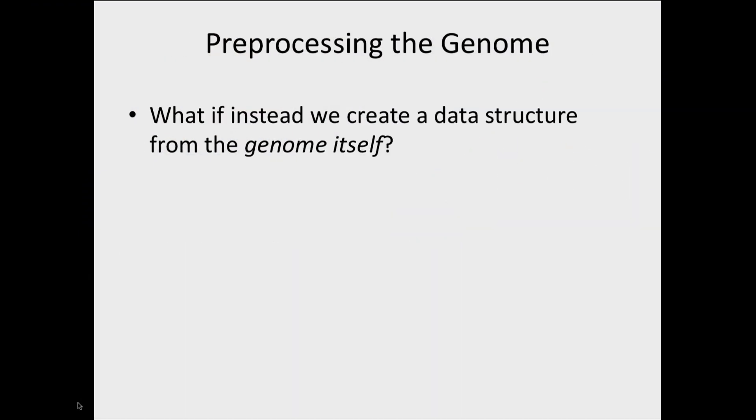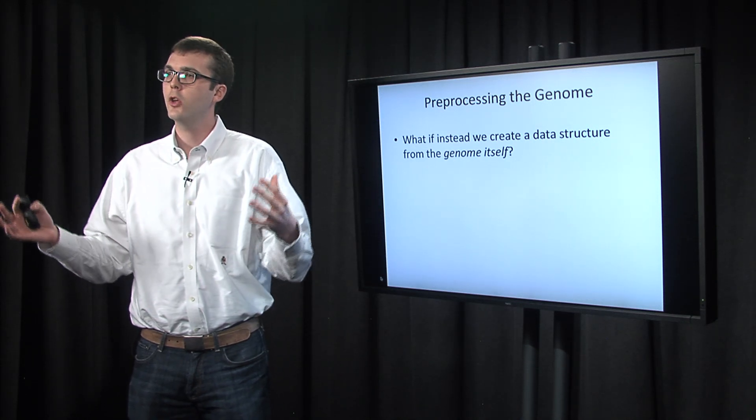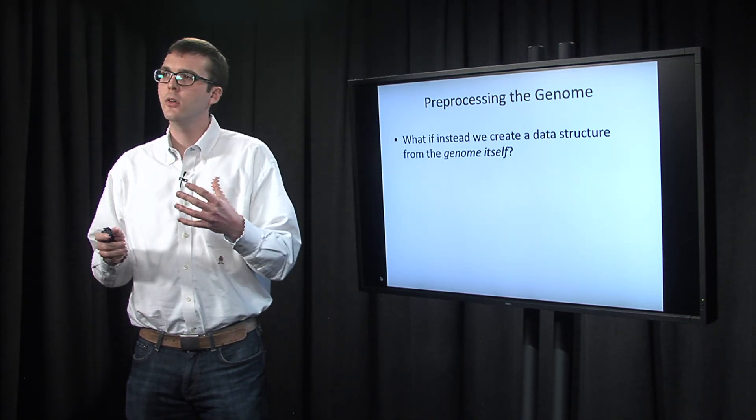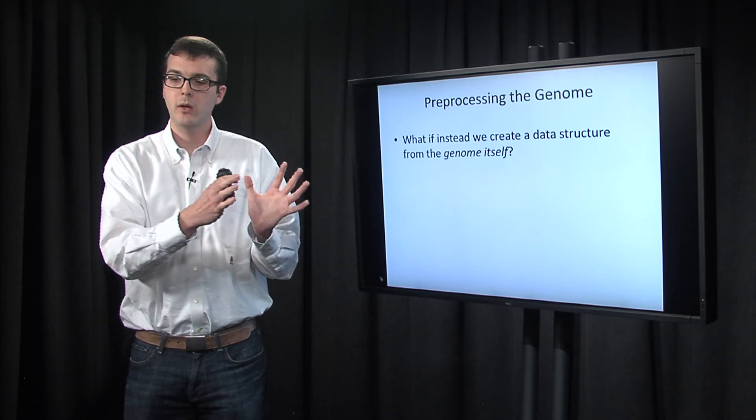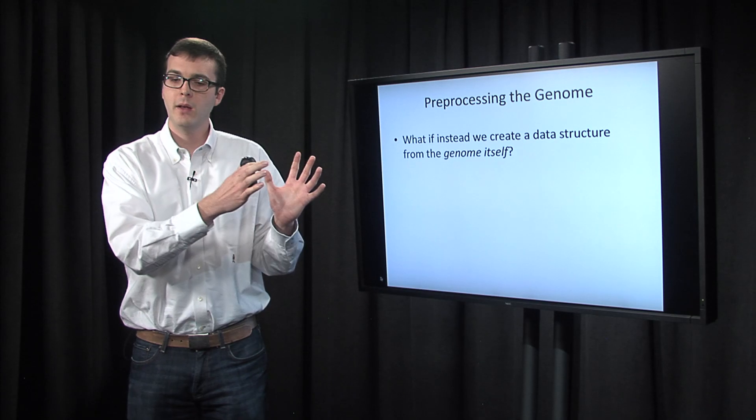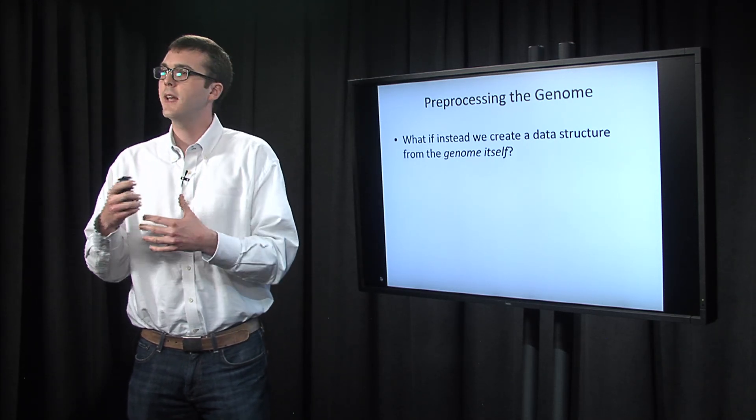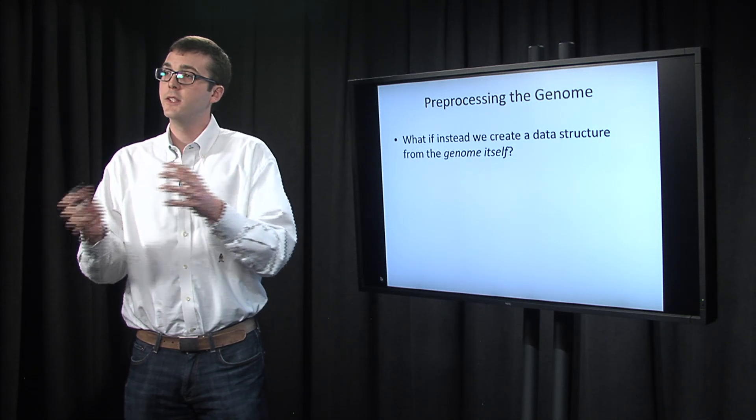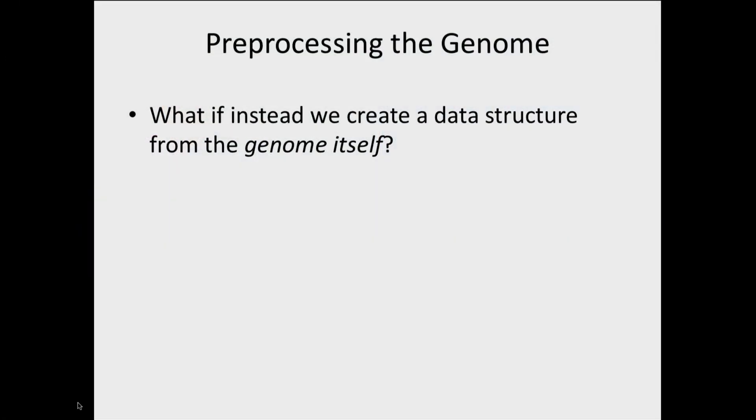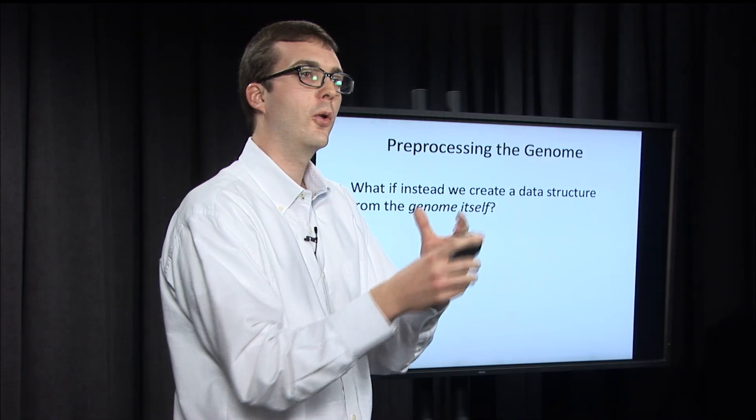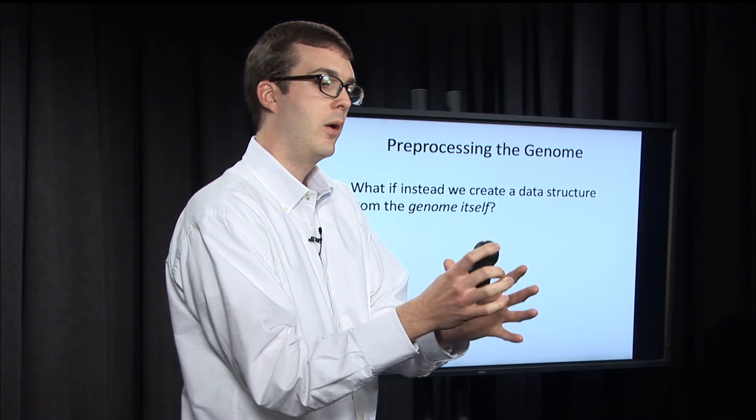So the question would be, rather than processing the patterns into a data structure, can we instead flip this around and say, can we process the genome into a data structure? If this data structure used big O of the length of genome, then that would be a huge memory reduction. Sean was talking about the idea of putting all the patterns into a data structure that he thought about as a bus. We could move this bus down the genome in one pass, and all the patterns could get off when they found a match. To do this data structure where we process the genome instead, we're going to ask each pattern, where is it that you want to go? And we're going to take the pattern straight there. We're going to essentially fold up the road itself, fold up the genome, and take it to the patterns.